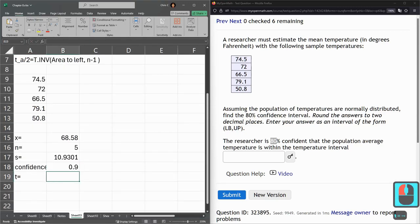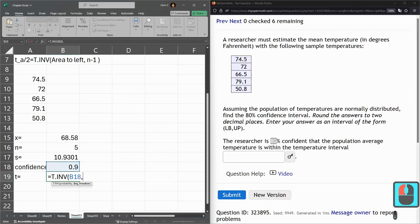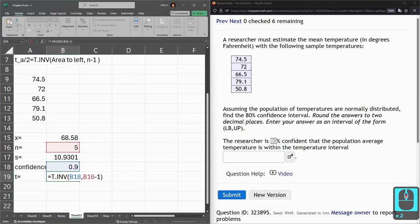We're going for the T value now. T dot inv. Probability is what we just computed. Degrees of freedom, remember, is N minus 1. That's somewhere up here, right here on row 7. You see the N minus 1 right there. That's our T value.